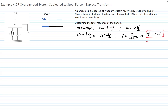A zeta value greater than 1 means the system is overdamped. The external force applied to the system is a step function, meaning it is 0 before time equals 0 and equals a constant value of 5 after t equals 0.